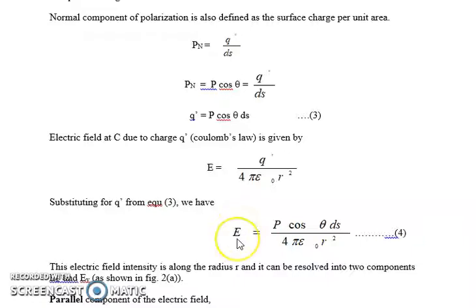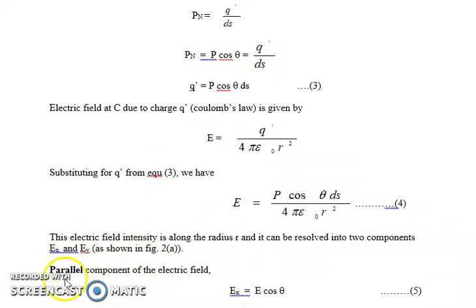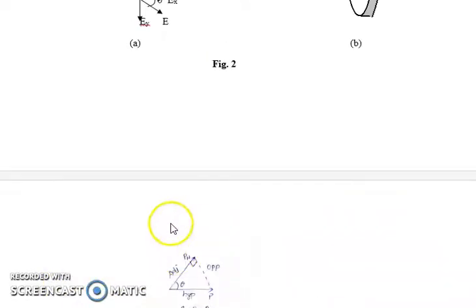Now, this electric field intensity is a vector quantity. Since it is a vector, we will resolve it into two components: a parallel component and a perpendicular component. This electric field is along the radius r, and it can be resolved into two components Ex and Ey. First, let us find out what is the parallel component.